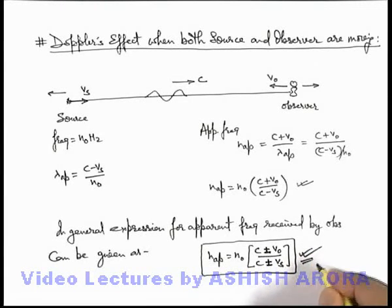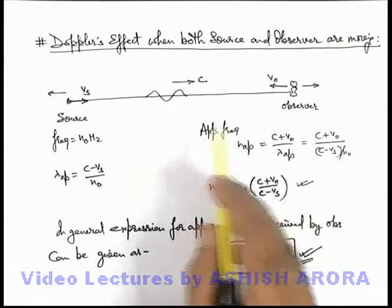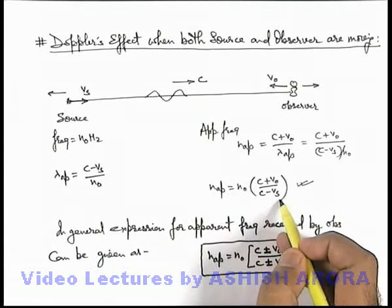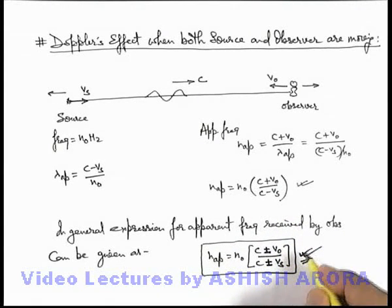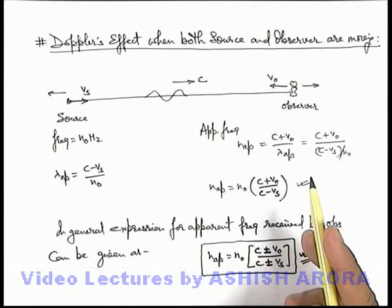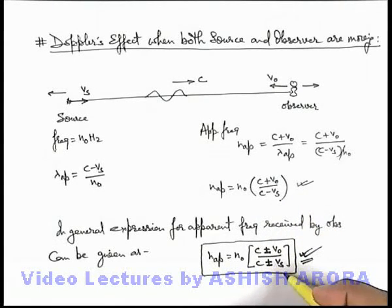So this is the direct relation we can use in various cases rather than using step-by-step analysis for each and every case. We'll directly use this expression for finding apparent frequency detected or heard by observer due to motion in observer and source by accounting Doppler's effect.